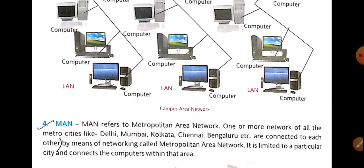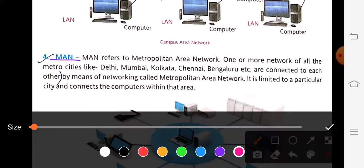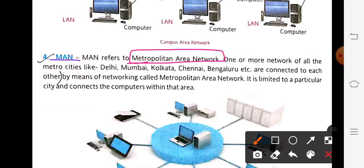MAN stands for Metropolitan Area Network. Metro refers to metro cities like Delhi, Mumbai, Kolkata, Chennai, Bengaluru, etc. When the workstations or devices are connected and we can send data within a single city, it is known as a MAN. LAN covers one building, CAN covers multiple buildings, and MAN covers multiple areas within a single city.